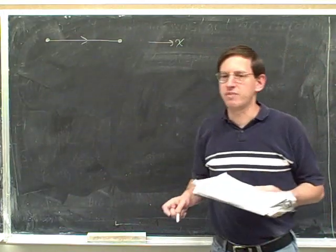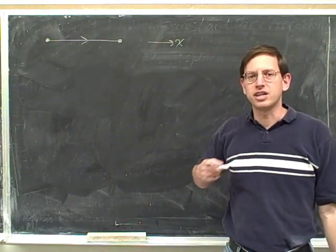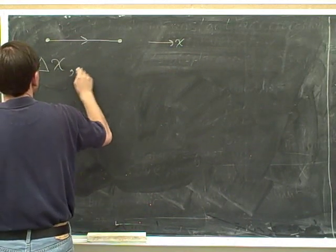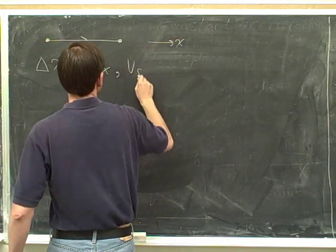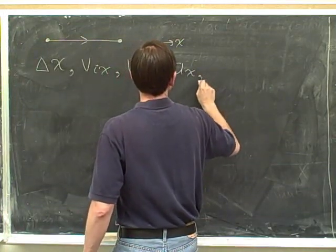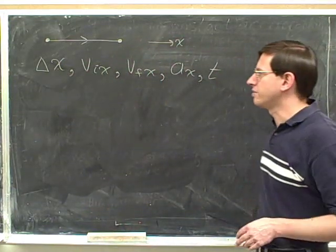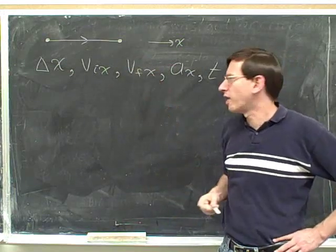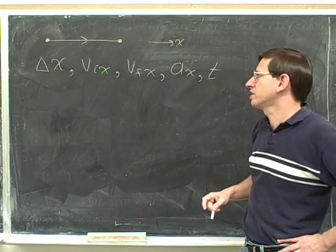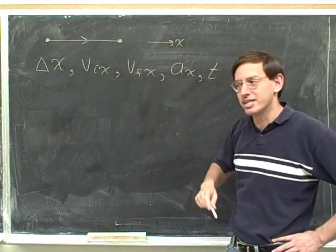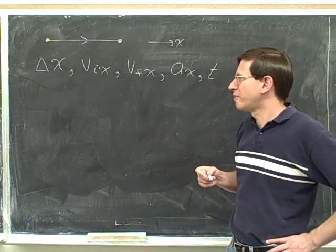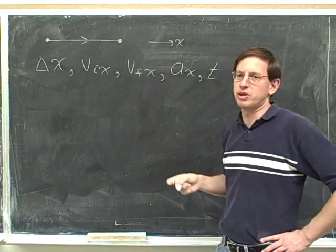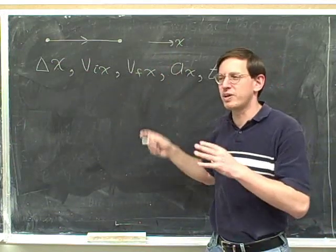Now here we come to the key part of the systematic method: write down all the kinematics variables. Here are the five kinematics variables. I'm not going to bother writing y-components since there's no y-component to this problem. For one-dimensional motion it's okay to just write the x-variables. However, we want to be conscious about thinking in terms of components, so I'm still going to use all the x-subscripts — and I think it's best if you start getting into that habit as well.